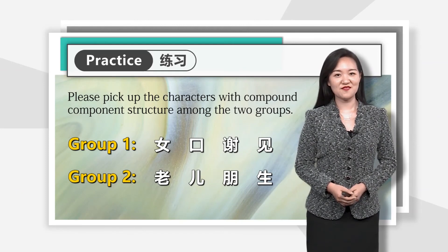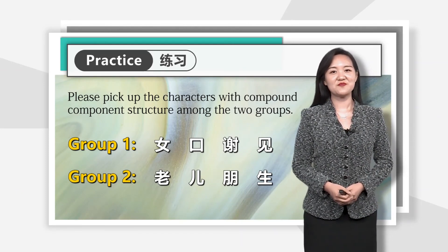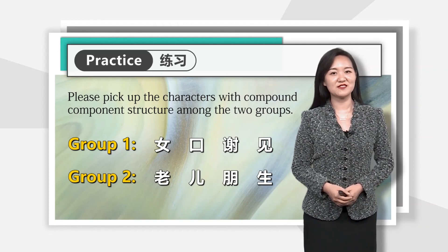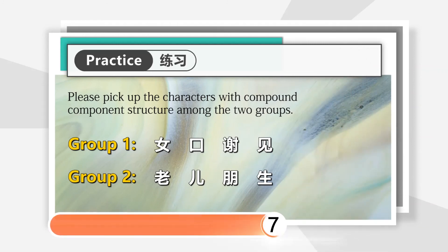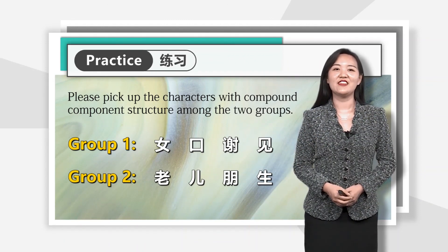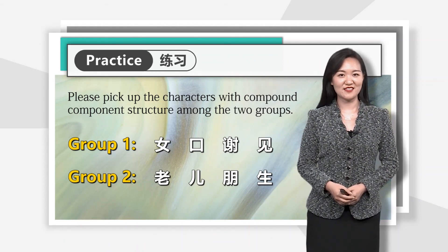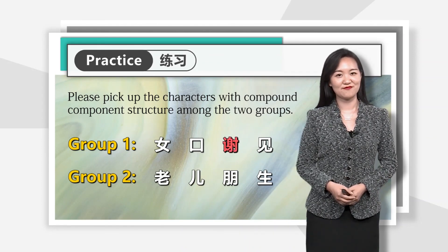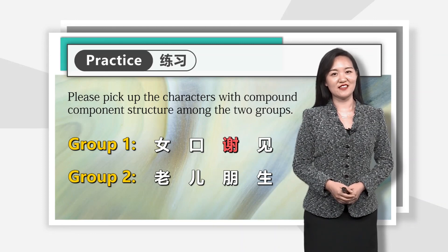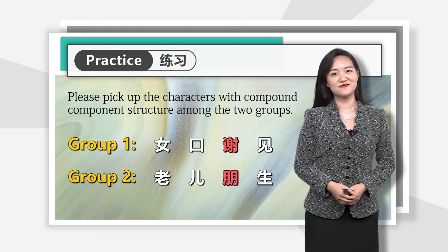Now let's do the second practice. Please pick up the compound structure characters from the following groups. Have you found them? In the first group, the right answer is 谢. In the second group, the right answer is 朋. Very good.